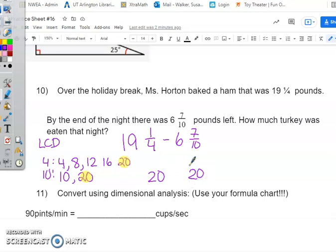Now we make equivalent fractions. So 4 times what is 20? 4 times 5, we'll put that by 5, we'll get 5.